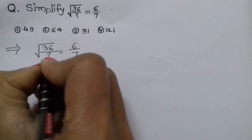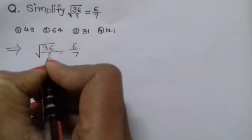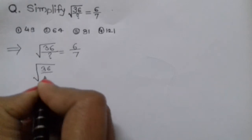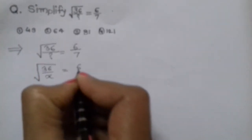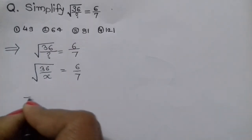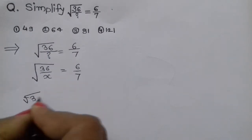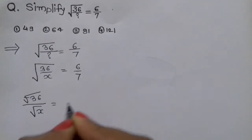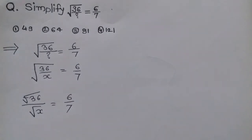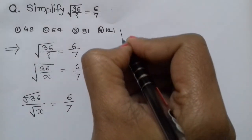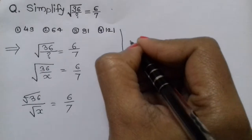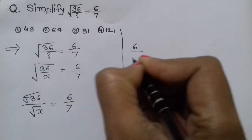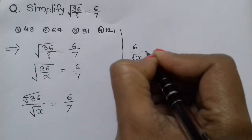To solve this, let the question mark equal x. So √(36/x) = 6/7. The square root of 36 is 6, so the equation becomes 6 divided by √x = 6/7.